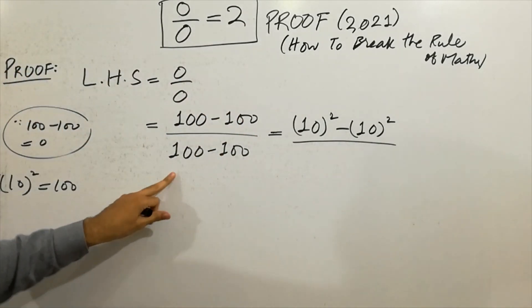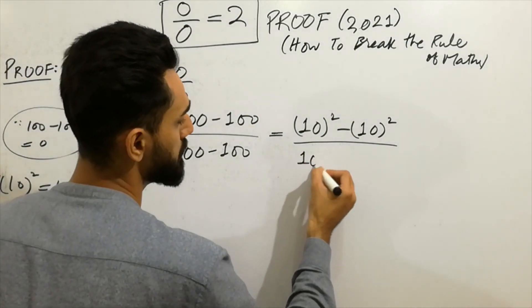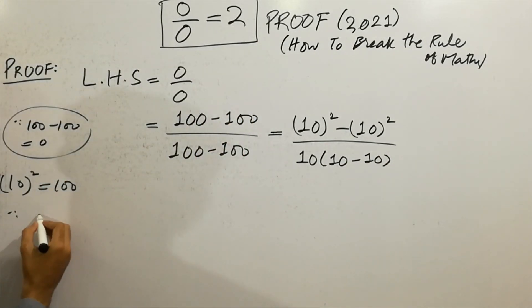And next time, 100 minus 100 can be written as 10 bracket 10 minus 10. How? How is this possible? Because 10 bracket 10 minus 10 is equal to 10 squared.